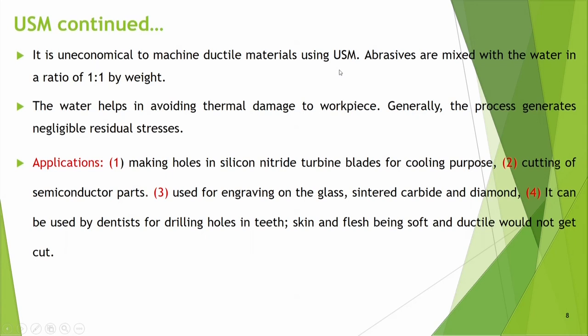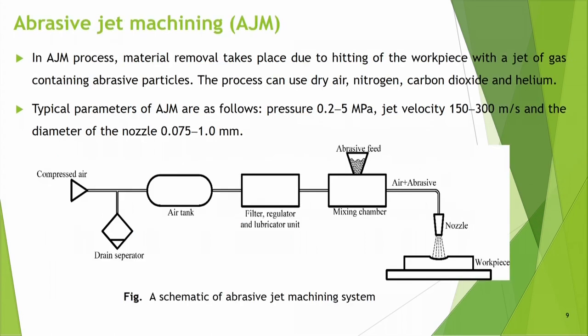It is uneconomical to machine ductile materials using USM. Abrasives are mixed with water in a ratio of 1:1 by weight. Water helps avoid thermal damage. The process generates negligible residual stresses. Applications include making holes in silicon nitride turbine blades for cooling, cutting semiconductor parts, engraving on glass, sintered carbide and diamond, and drilling holes in teeth by dentists — the skin and gum tissue, being soft and ductile, would not get cut.